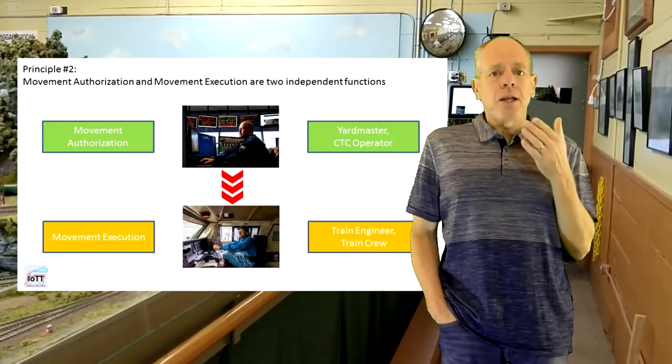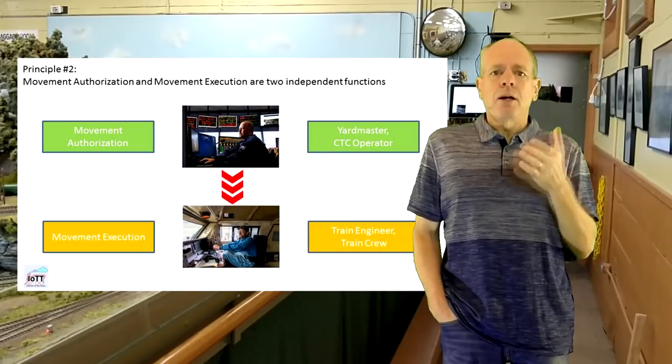The form is not important. The important thing is the concept of having two different layers of authority. One for the general permission to move from one interlocking to the next, and then a more detailed layer that defines the speed at each location along the track to be used. And again, this lower layer may or may not consist of light signals, but alternate means are possible as well.